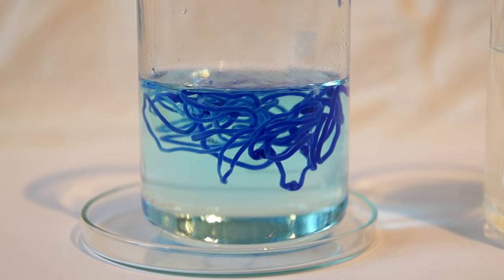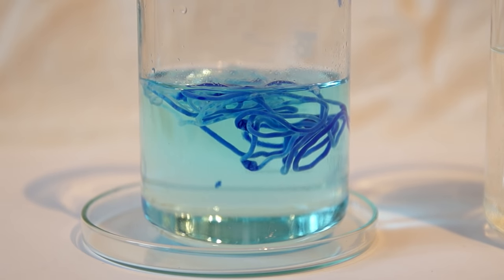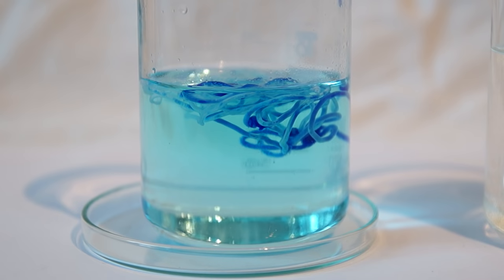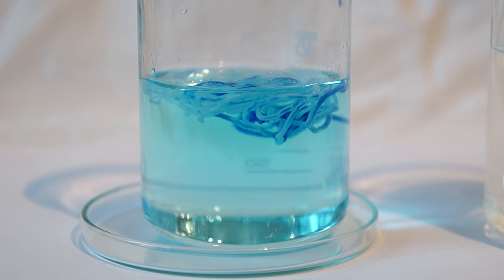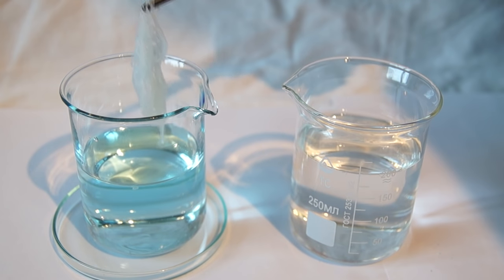After some time, sulfuric acid reacts with the complex compound and washes towards the copper cells from the fibers. Fibers become colorless. After that, our fibers are bleached and now we can find out how they feel.